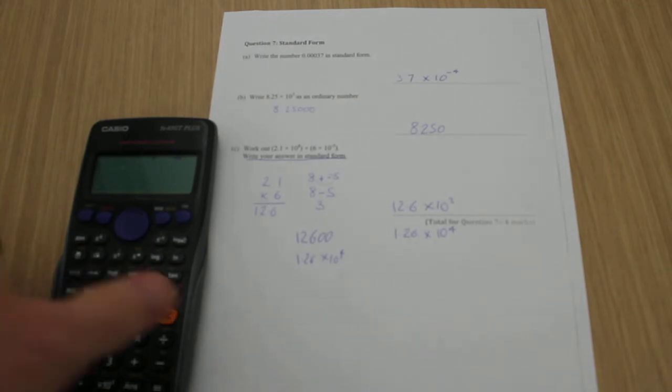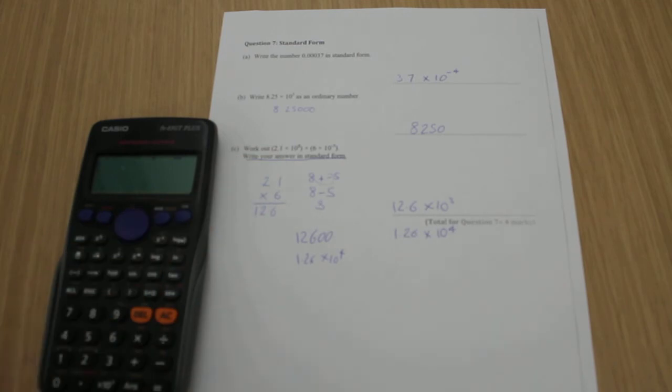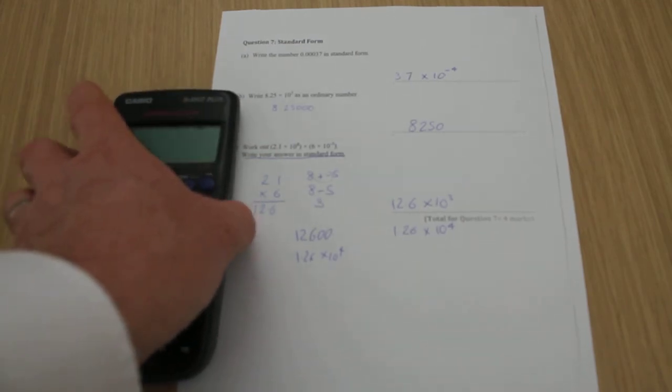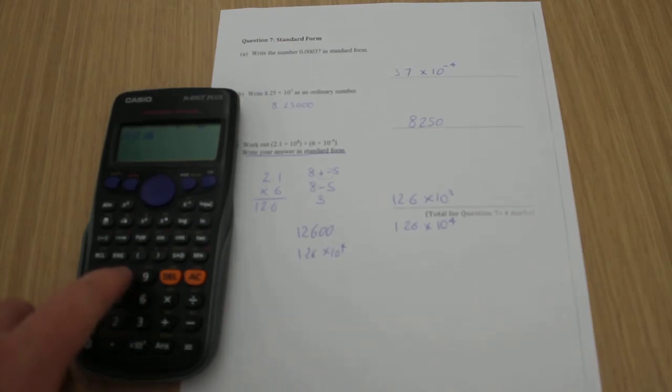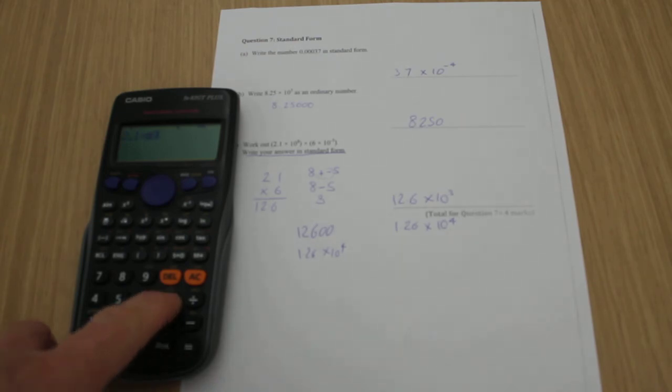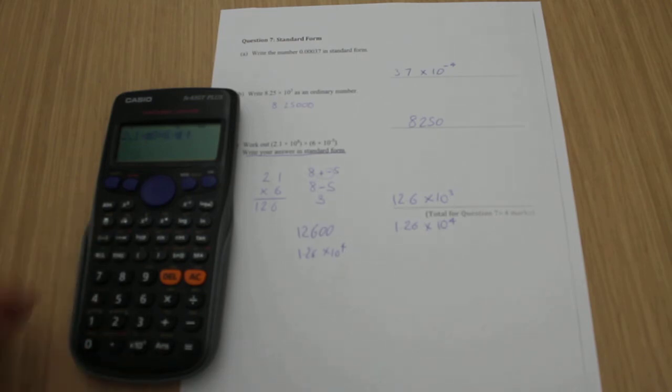Now, a calculator method for this, we've got to use this button down at the bottom of my calculator. So I type in 2.1, I press that button, and then 8, so that's 2.1 times 10 to the power of 8, times 6, press the button again, and I use this negative button here to the power of 5.